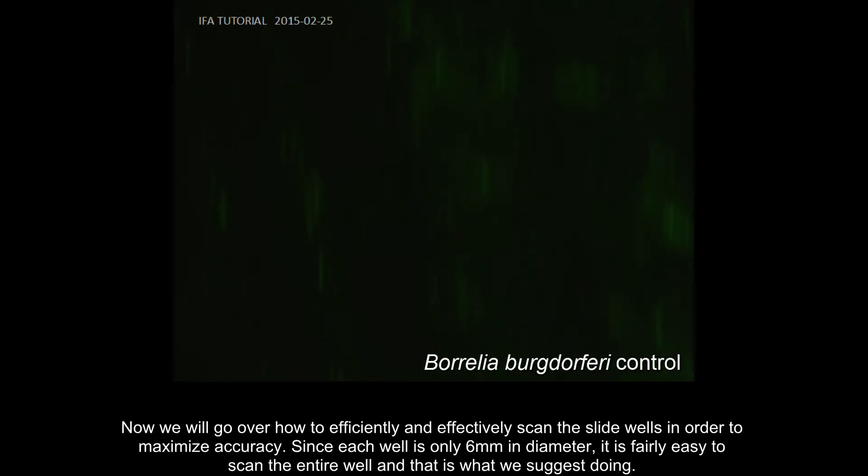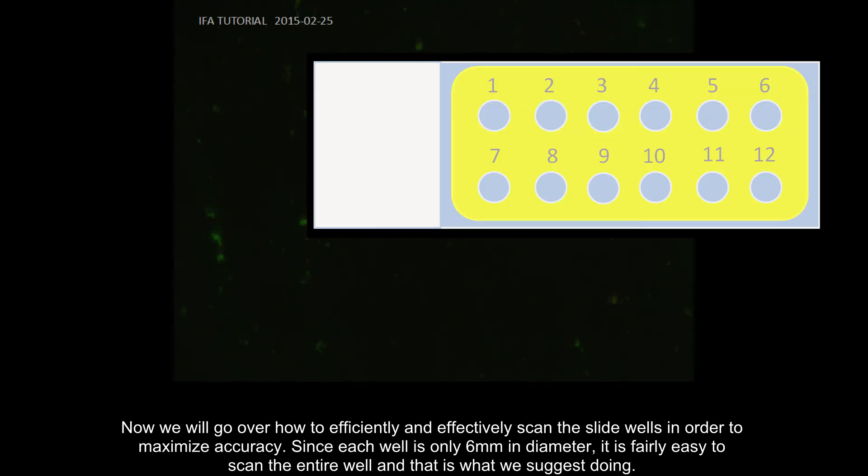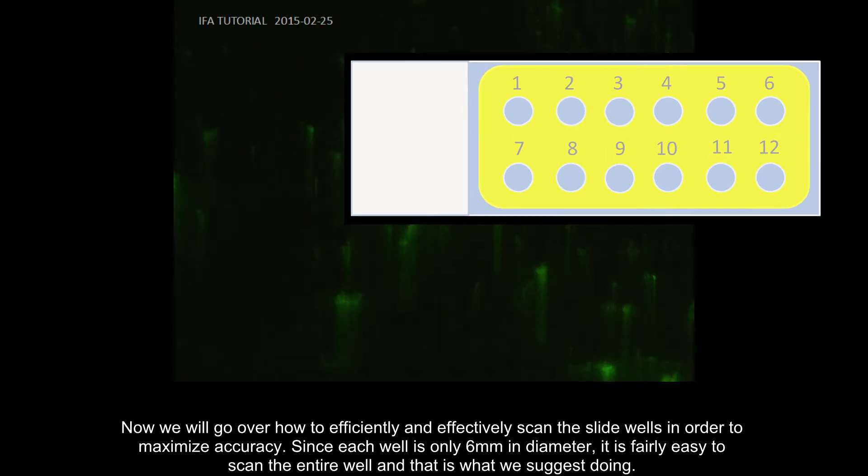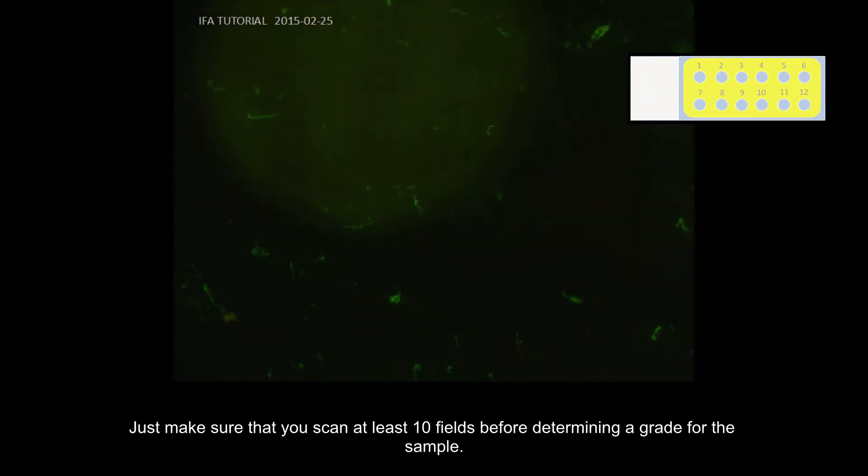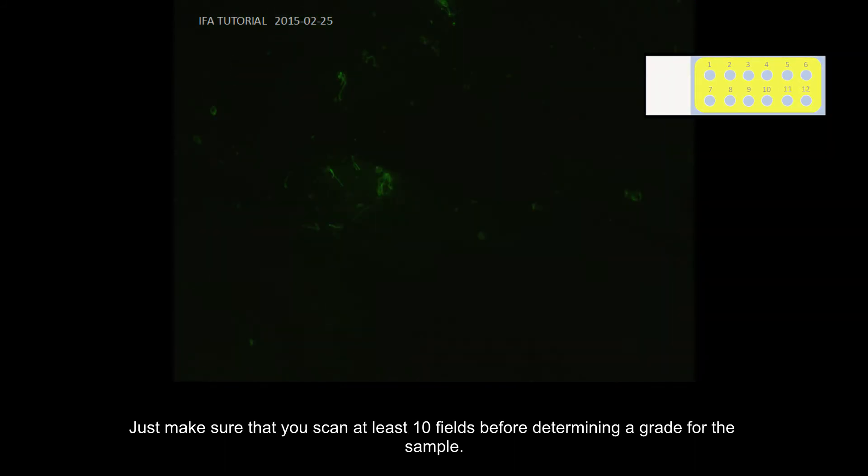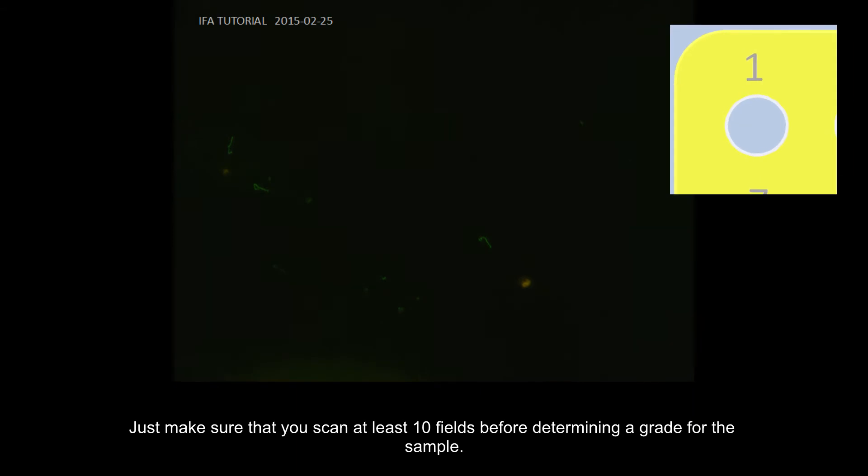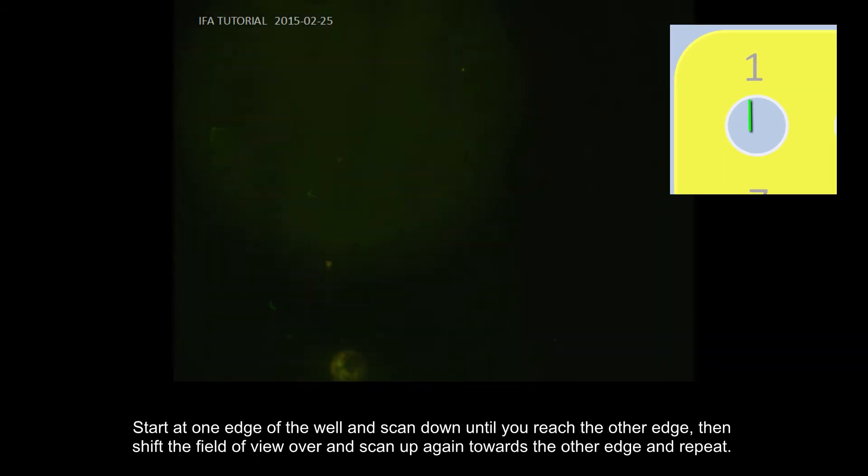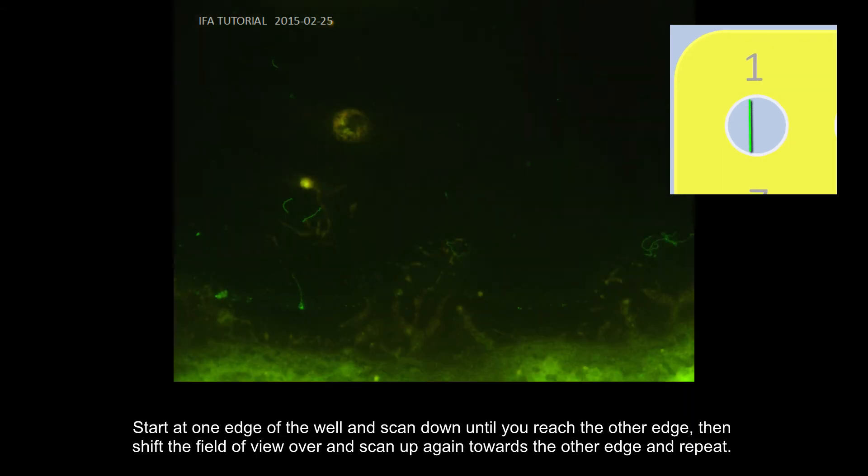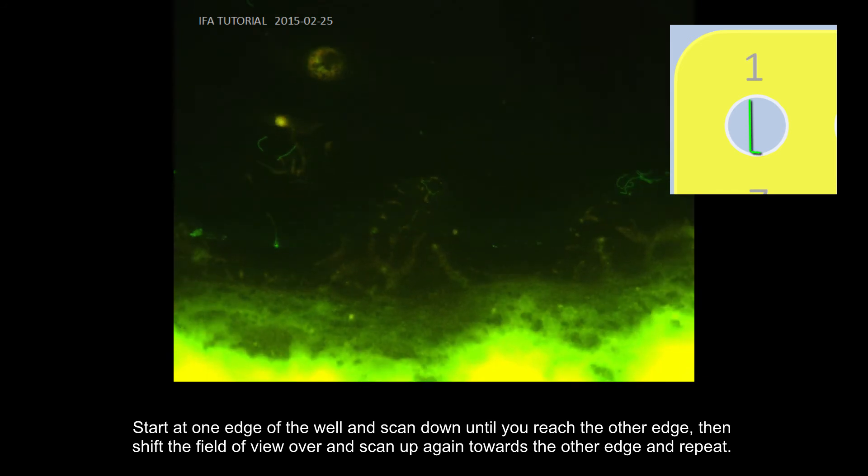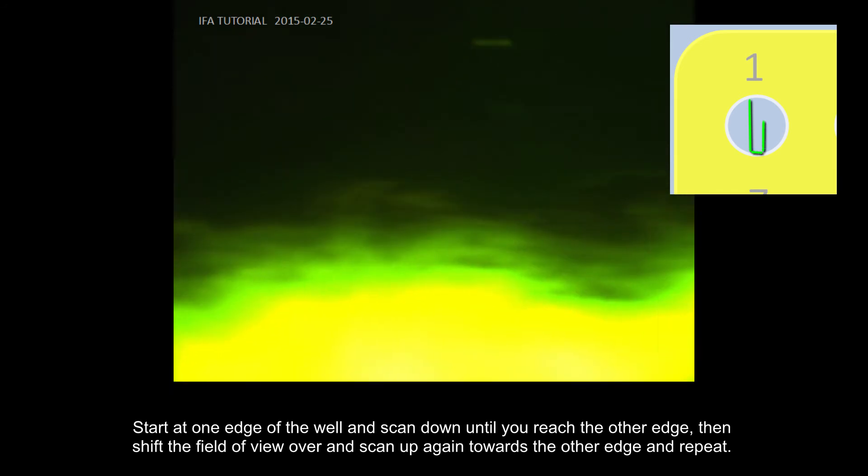Now we will go over how to efficiently and effectively scan the slide wells in order to maximize accuracy. Since each well is only 6 mm in diameter, it is fairly easy to scan the entire well, and that is what we suggest doing. Just make sure that you scan at least 10 fields before determining a grade for the sample. Start at one edge of the well and scan down until you reach the other edge, then shift the field view over and scan up again towards the edge and repeat.